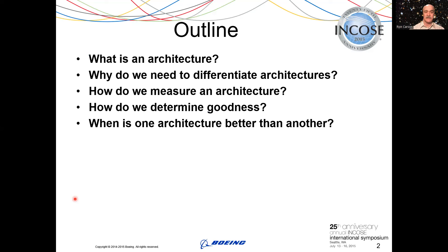We're going to talk about what is an architecture using the definitions that were available at the time, and why we need to differentiate architectures — in other words, how can we use the measures to make decisions. How do we measure an architecture? That'll be a review of key results from the 2013 paper, which is available in the Wiley & Sons Library. And how do we determine goodness, and ultimately when is one architecture better than another, which was something our sponsors were very interested in.